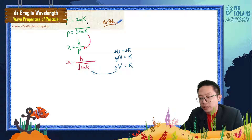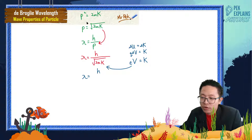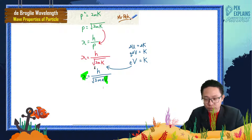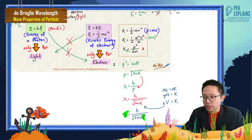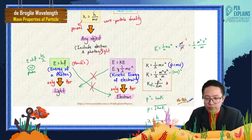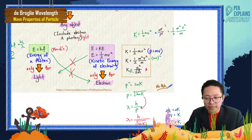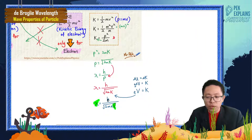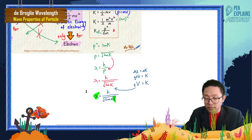Since K = eV for an electron accelerated through a potential difference, we get another formula: λ = h / √(2meV), relating wavelength to potential difference. I'll cover this in the next video. For now, the key formulas to remember are E = hf, KE = ½mv², and K = p²/2m — the rest you can derive yourself.